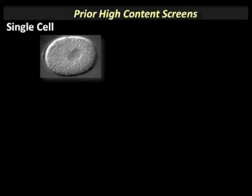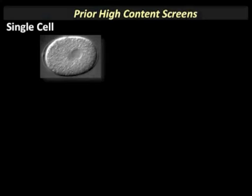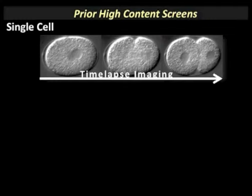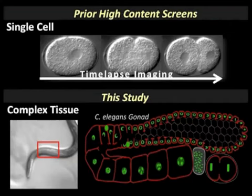Most high-content screening has been done in single cells, often imaging them over time to increase information content. Here, we take a different approach to increase information content, imaging a complex tissue in a multicellular organism, the nematode C. elegans.